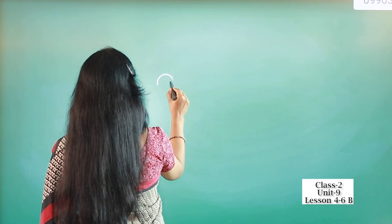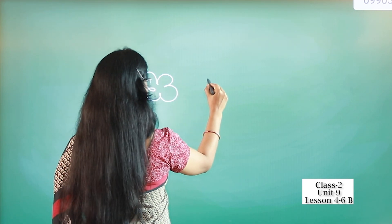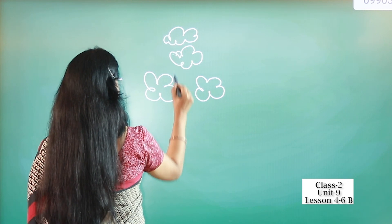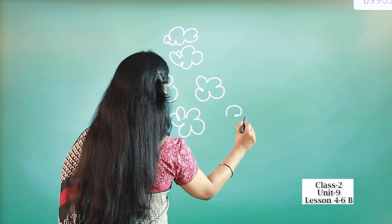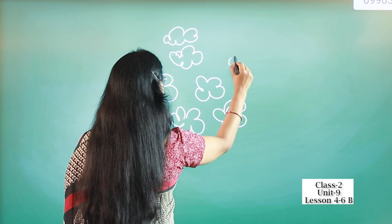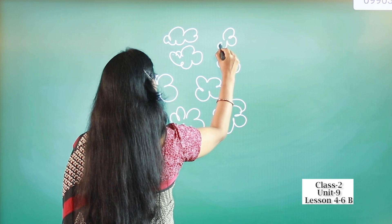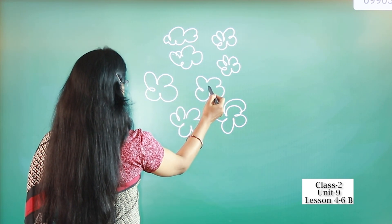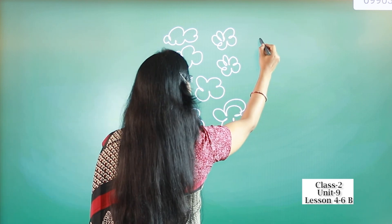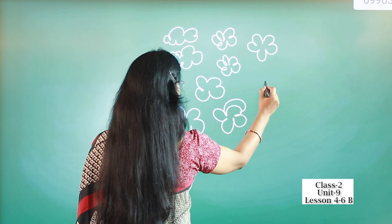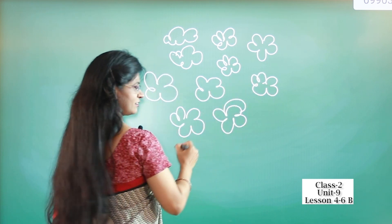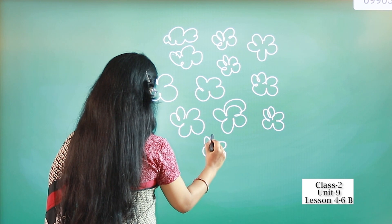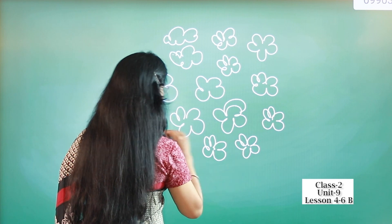I'm drawing flowers. Can you count the numbers? One, two, three, four, five, six, seven, eight, nine, ten, eleven, twelve, thirteen.